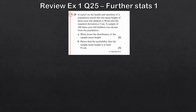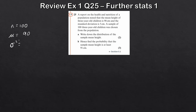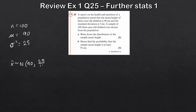Let's move on to the final question, from Review Exercise 1, question 25. We have data on the height of a population: n = 100, mean mu = 90, and standard deviation = 5, so variance = 25. Writing down the approximate distribution: X̄ is approximately normally distributed with mean 90 and variance 25 over 100, which is a quarter.